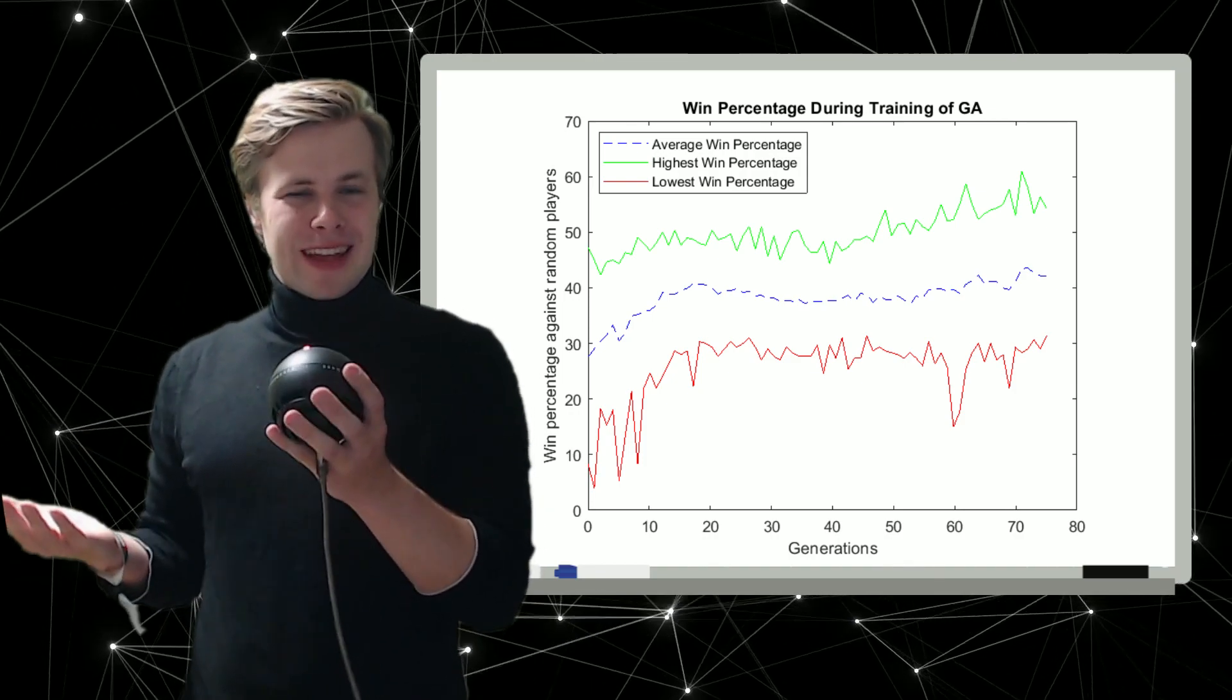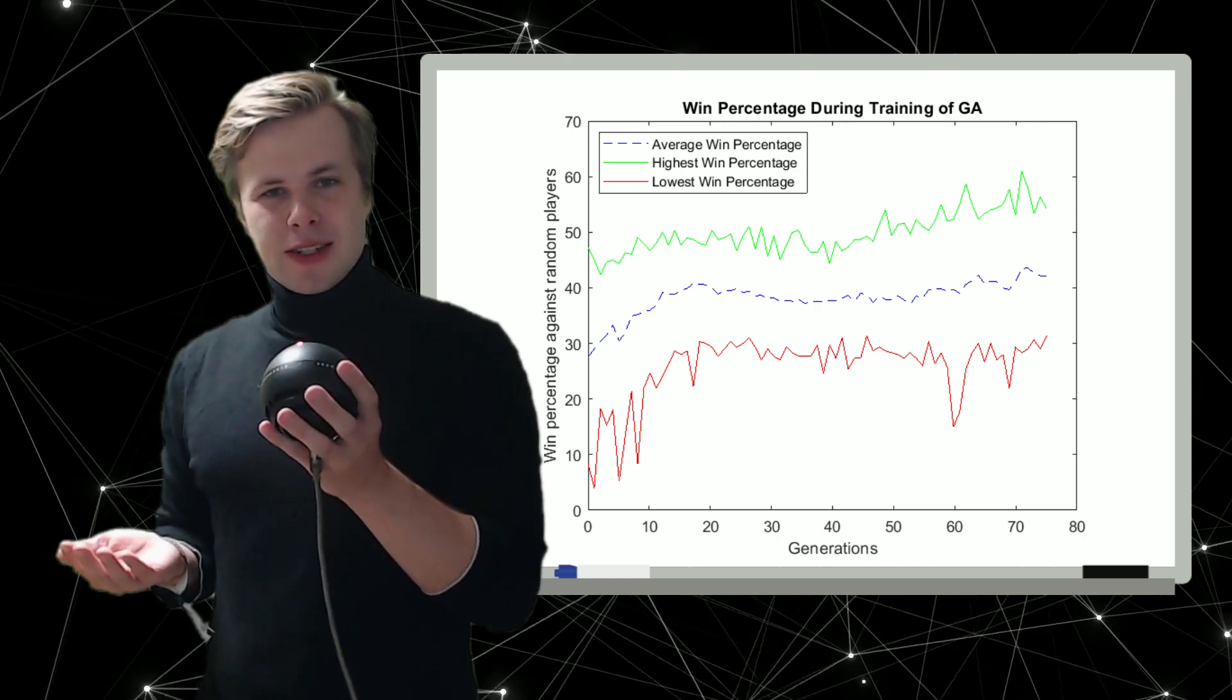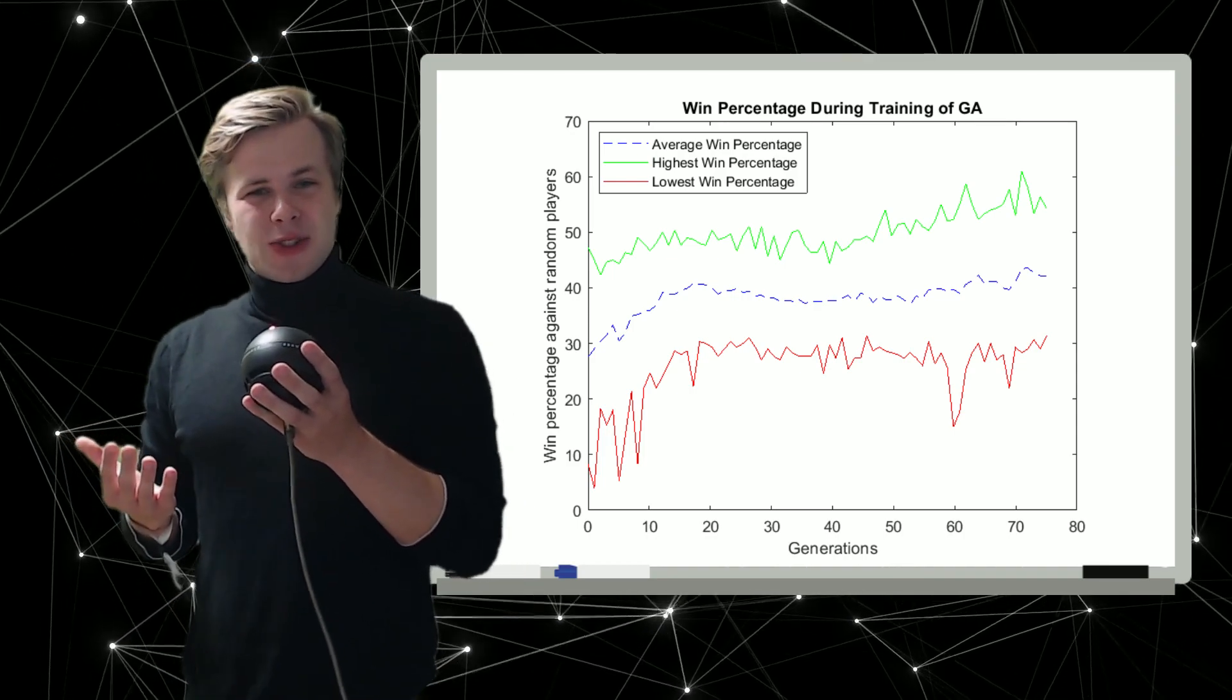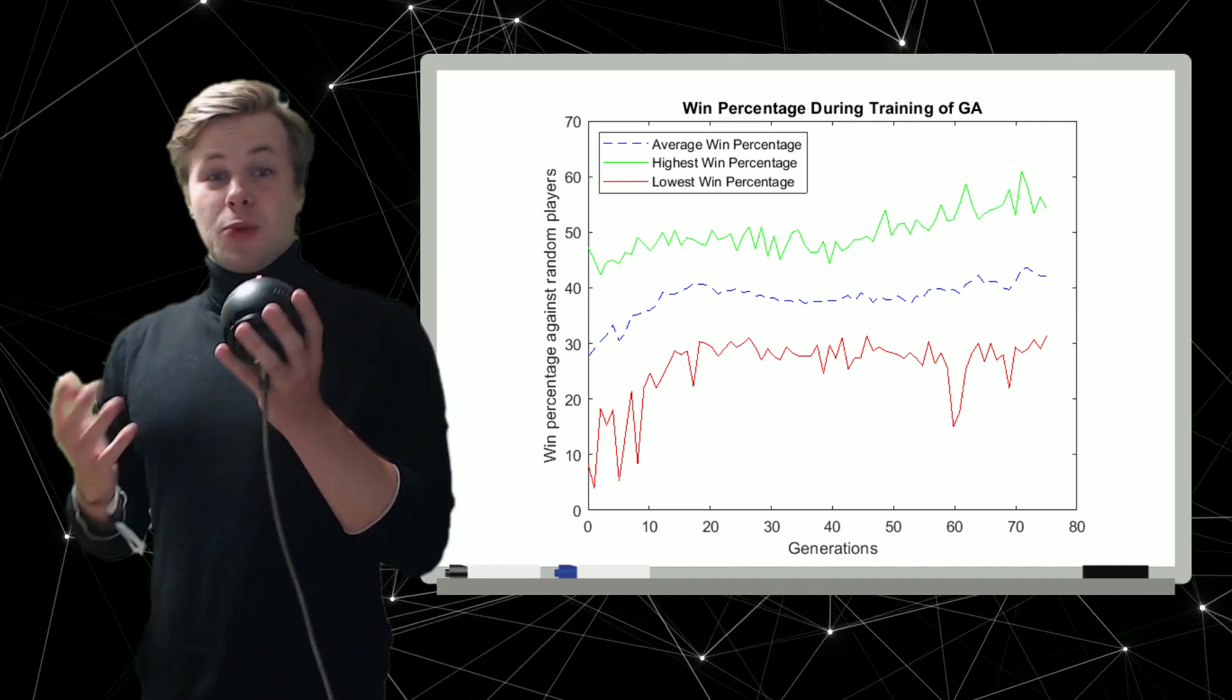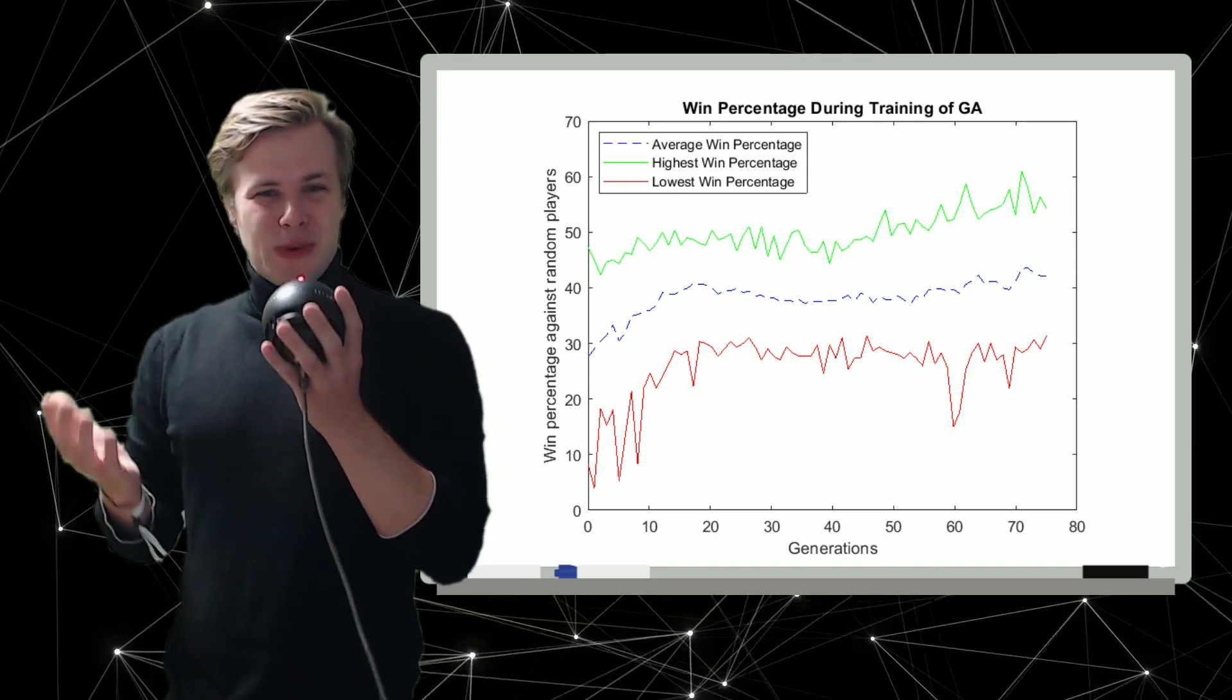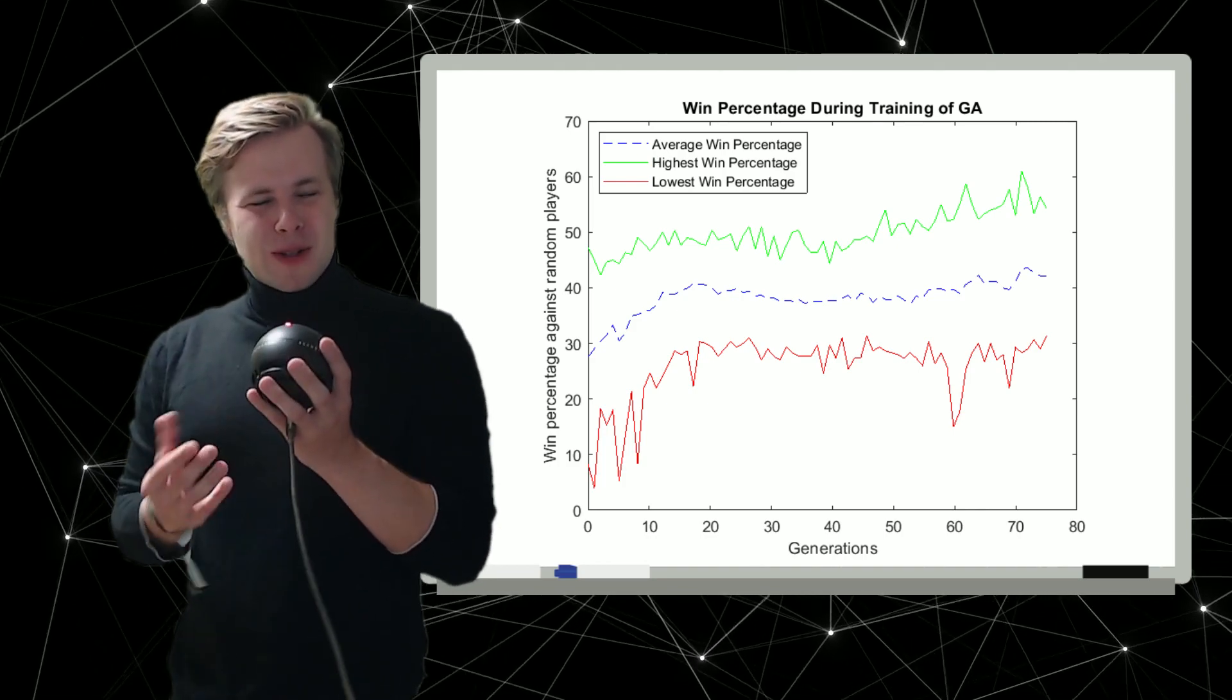The red line shows the worst one in each generation and the green line shows the best one in each generation. And what we can see is that the AI actually manages to win up to 62% of the time against three random bots, which is really good.